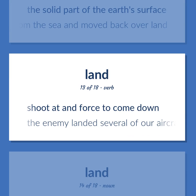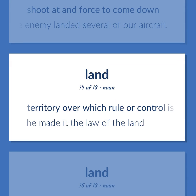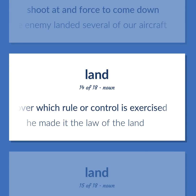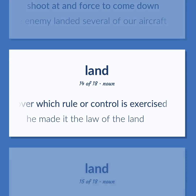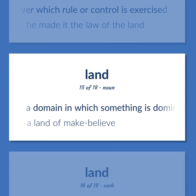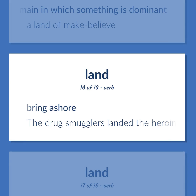Land: shoot at and force to come down — the enemy landed several of our aircraft. Territory over which rule or control is exercised — he made it the law of the land. A domain in which something is dominant — a land of make-believe. Bring ashore — the drug smugglers landed the heroin on the beach of the island.